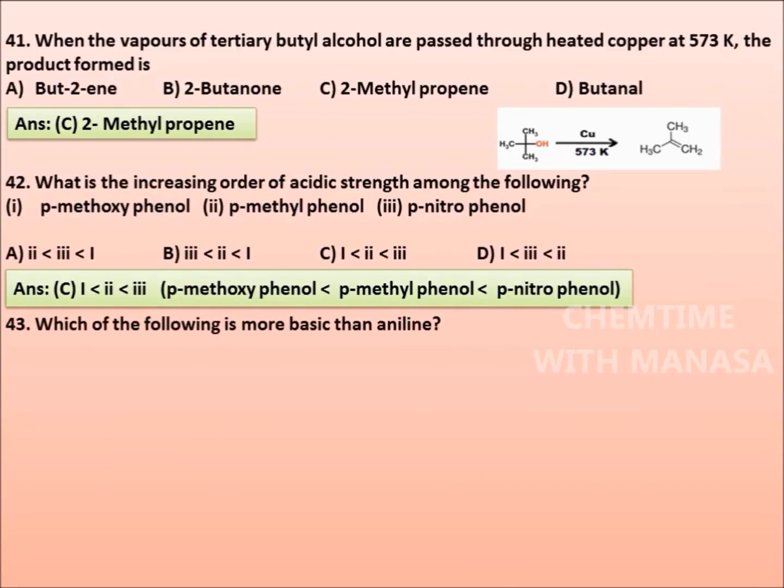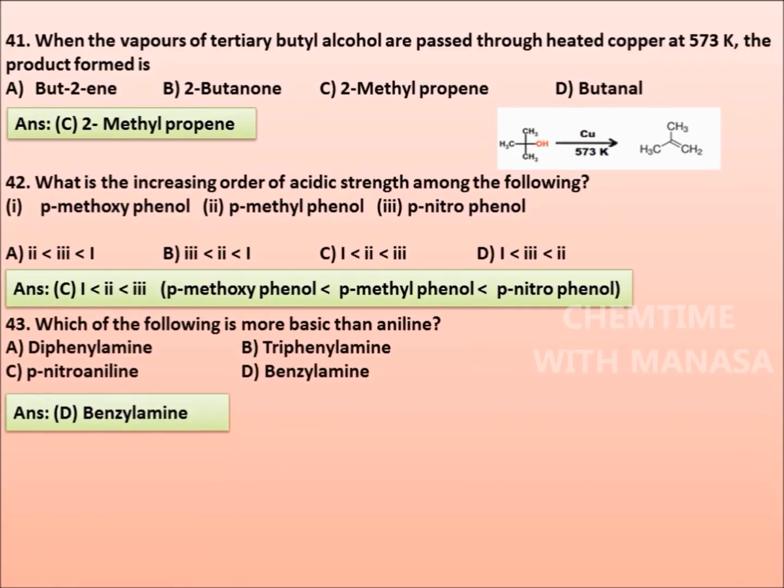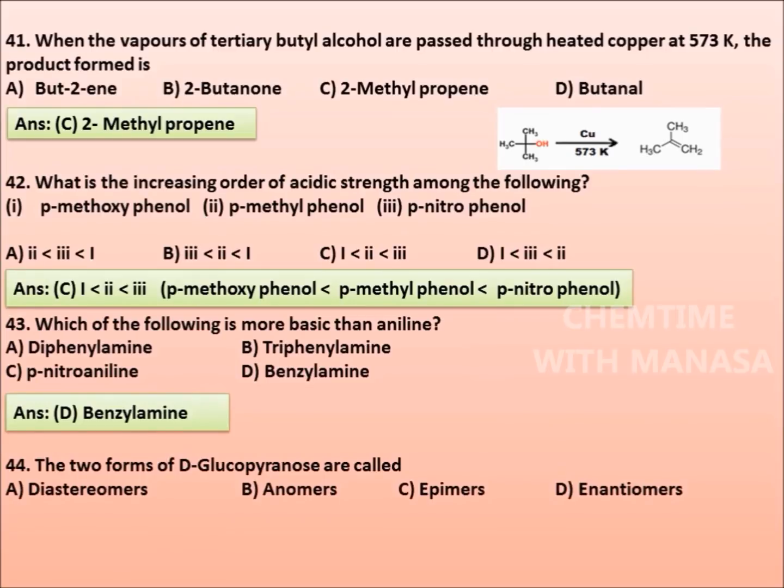Question 43: Which of the following is more basic than aniline? Diphenylamine, triphenylamine, p-nitroaniline, benzylamine. Correct answer is benzylamine.